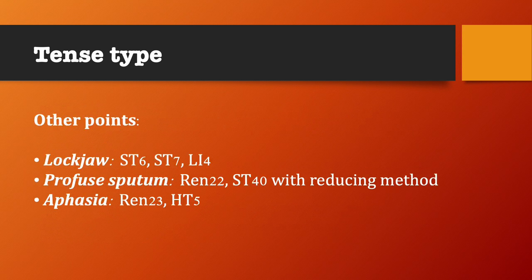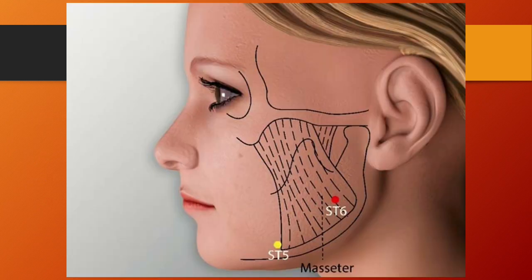Other points for specific symptoms in tense type: for lock jaw, use Stomach 6, Stomach 7, and LI4. For profuse sputum, use REN22 and Stomach 40 with reducing method. For aphasia, use REN23 and Heart 5. Stomach 6, Jiache or jaw bone, is located on the cheek in the depression one finger-breadth anterior and superior to the lower angle of the mandible, where the masseter attaches and the muscle is prominent when teeth are clenched. Functions: dispels wind, clears obstructions in the meridian, relieves pain, benefits the jaw and teeth. Needling: perpendicular insertion 0.3 to 0.5 tsun, or subcutaneous insertion 0.5 to 1 tsun, or insert towards Stomach 4.